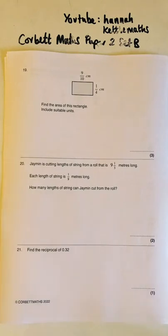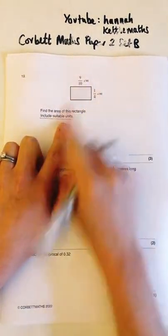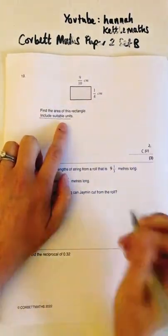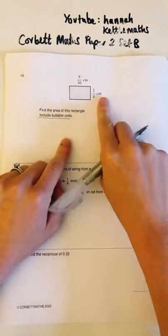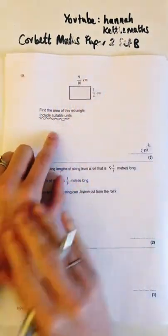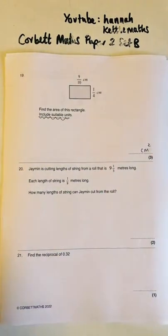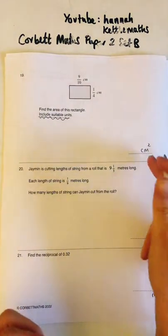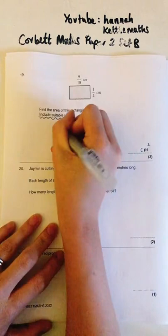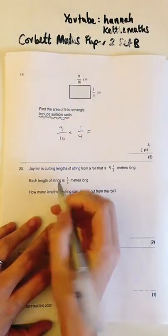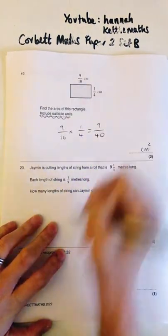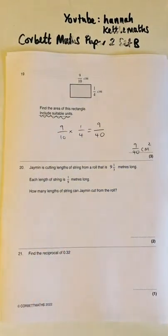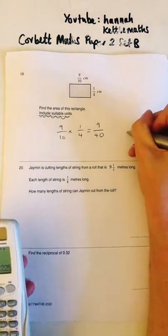Find the area of a rectangle — include suitable units. Even if you don't know how to do it, write cm² on the answer line for a free mark. The rectangle is 9/10 by 1/4. Multiplying fractions: top times top, bottom times bottom — 9 over 40 cm². As a decimal that's 0.225.